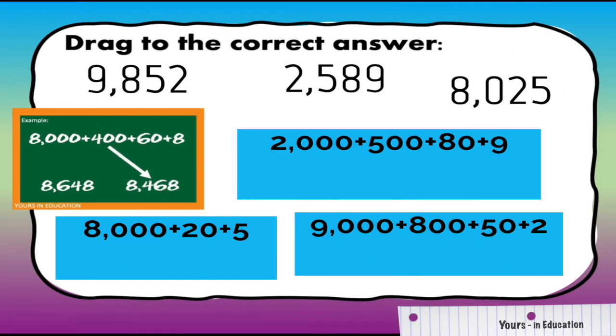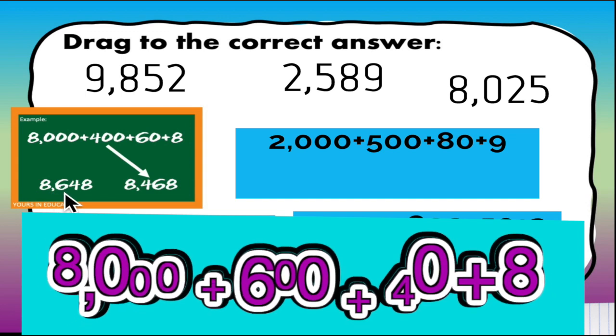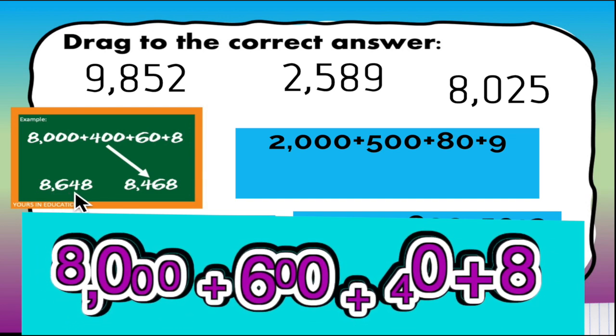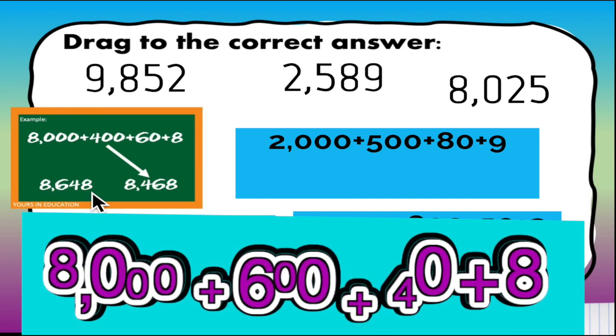The last type of problem is to drag to the correct answer. Once again I give you an example. 8,000 plus 400 plus 60 plus 8 is equivalent to 8,468. As you can see the digits here are mixed up. In this case expanded form will be 8,000 plus 600 plus 40 plus 8.